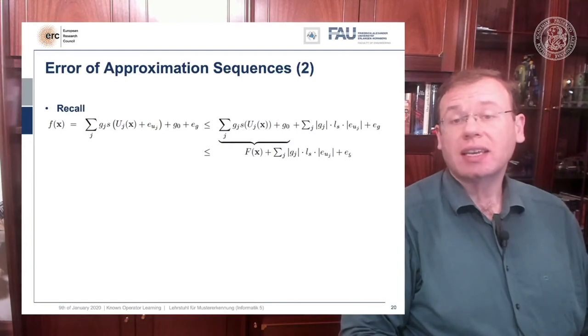So this is the approximation using g and u, and this then can be simplified to just write down capital f of x.